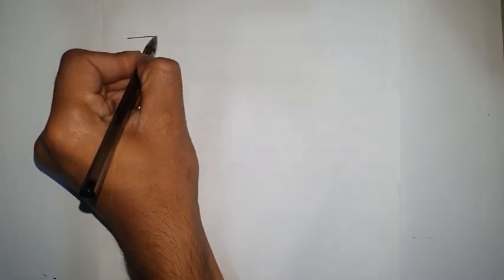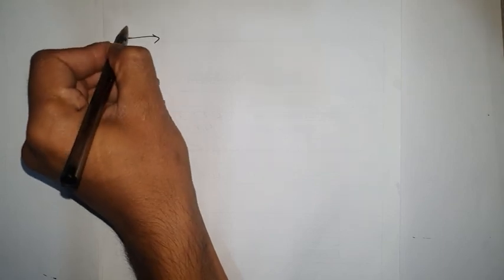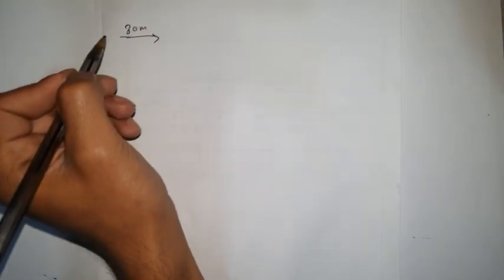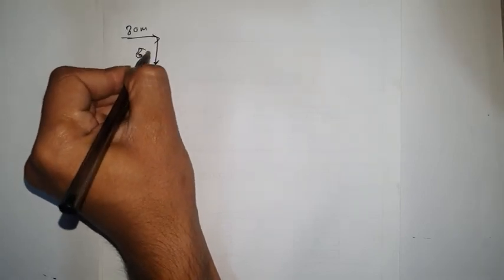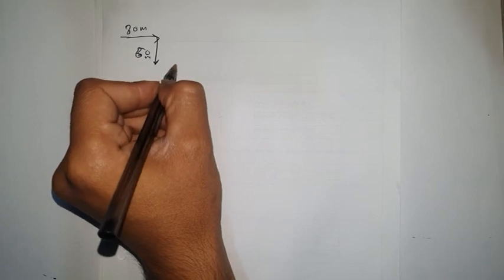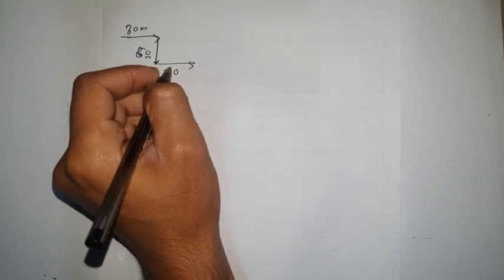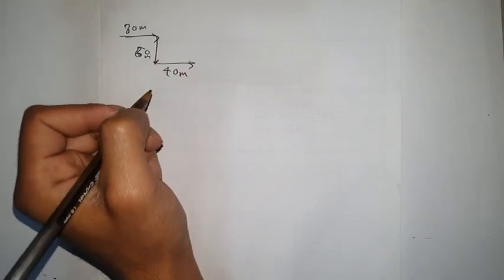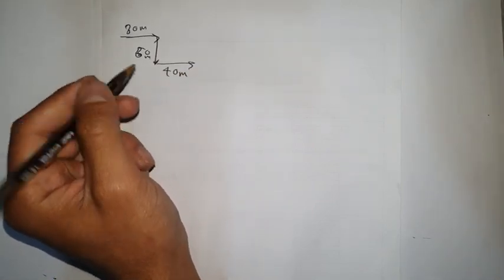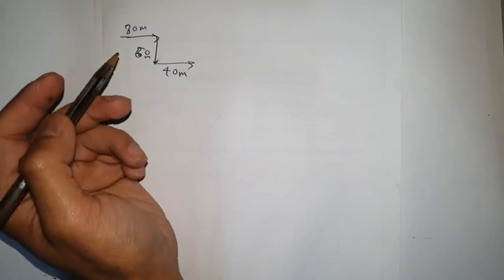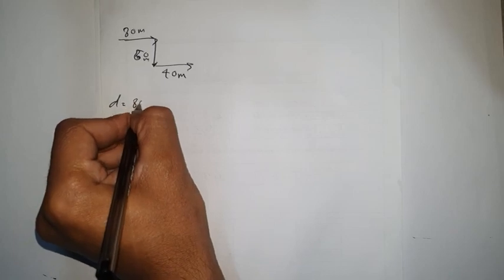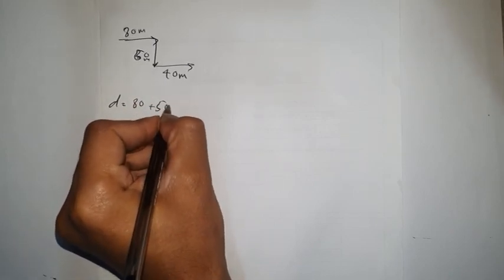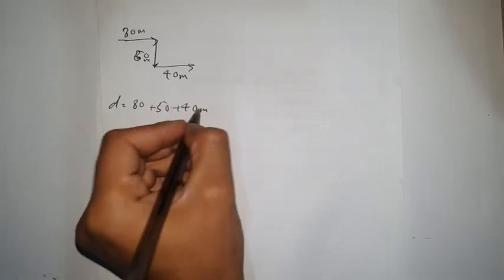Here's another example. Suppose this guy traveled from this point to this point — 80 meters — then back and traveled 50 meters, and again in this direction 40 meters. To find the distance, we add them: 80 plus 50 plus 40 meters, which gives us 120 meters. That is the total distance this guy traveled.